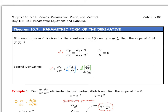Here we are in 10.3 Parametric Equations and Calculus. We're going to look at the parametric form of the derivative and also the second derivative. If we have a smooth curve C given by x in terms of t and y in terms of t, then the slope of C at (x, y) — that is, dy/dx — equals the derivative of y with respect to t over the derivative of x with respect to t.